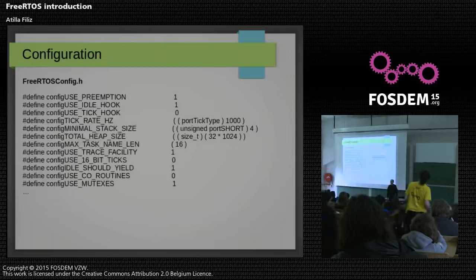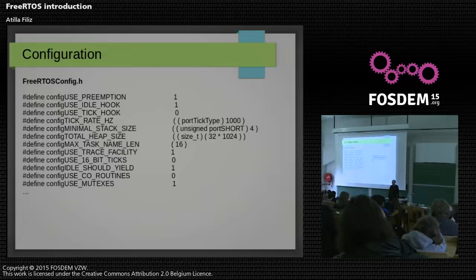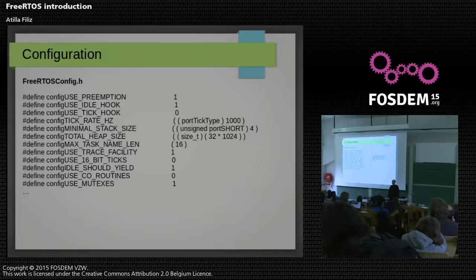This is how we configure FreeRTOS. There is a file called FreeRTOSConfig.h and you keep defining symbols. You enable preemption or not, you can enable or disable several hooks if you need. Then there are some numerical parameters like how long a task's name can be, and options for tracing, mutexes, and so on.